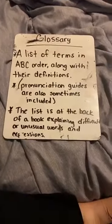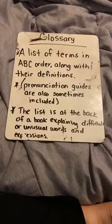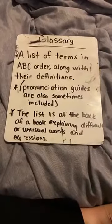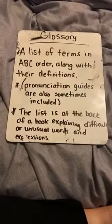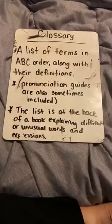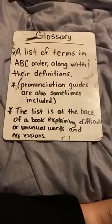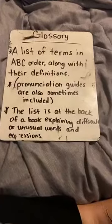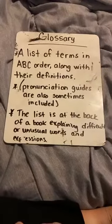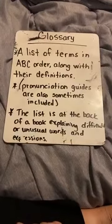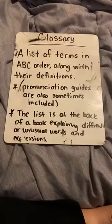It's always in the back of a book and it explains difficult or unusual words and expressions. Glossaries — where do you find them? That's right, you find them at the end, at the back of the book. Think about your science book or your math book — where is that glossary? It's at the back. And it's not a table of contents — that's different, we'll talk about that later this week. A glossary gives the definitions of terms, it's in ABC order, and it's always at the back.